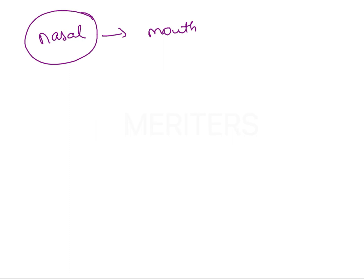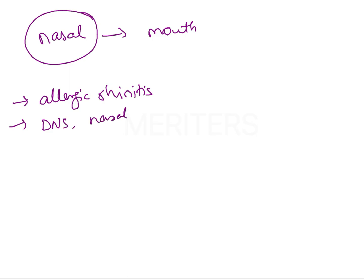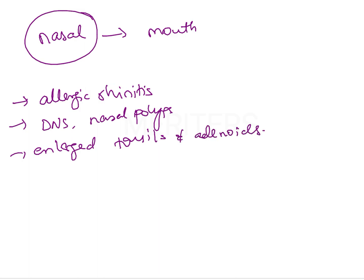Causes of nasal obstruction include certain developmental problems, pathology, or intermittent problems such as allergic rhinitis. Allergies can bring about proliferation of the blood vessels of the nasal mucosa, causing obstruction of the nasal passage. Other causes include deviated nasal septum, nasal polyps, enlarged turbinates, or enlarged tonsils and adenoids. So there can be a wide variety of reasons for obstruction of the nasal passages.